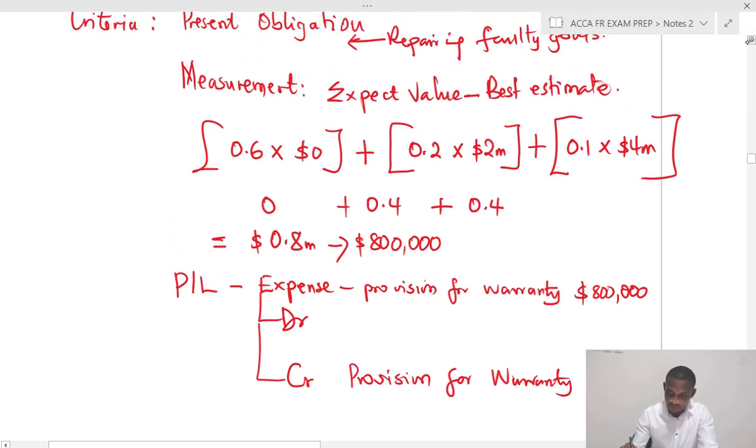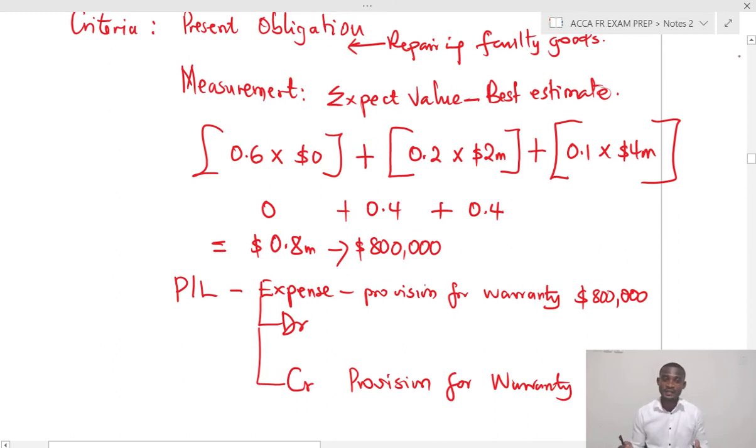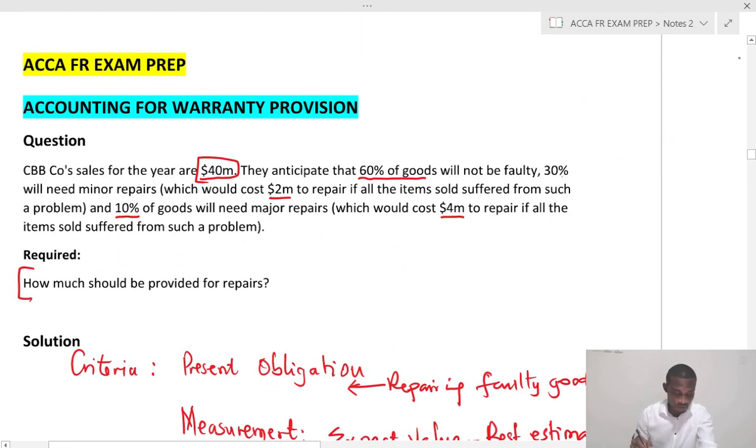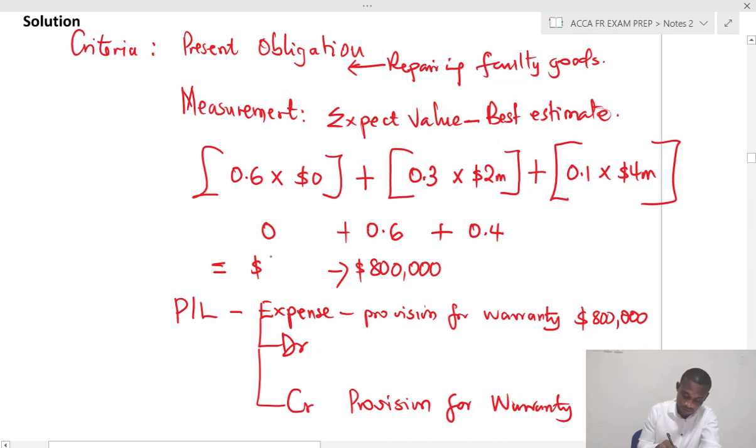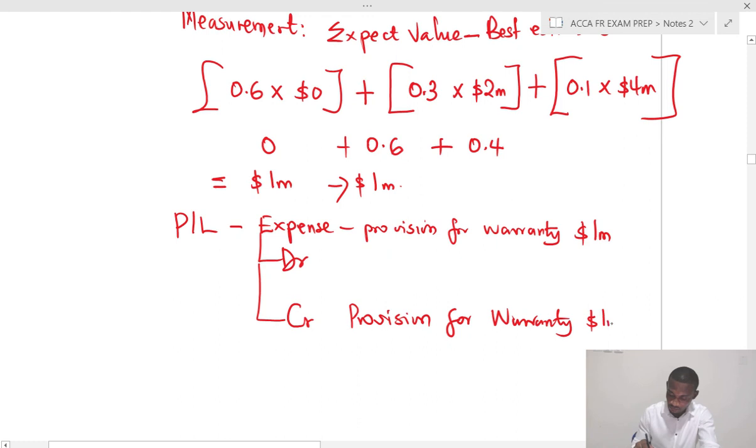So just notice what we have done. Whenever we are accounting for a provision for warranty, we take the expected values from all the possible cost outcomes. So let me quickly change that. 2 times 0.3, that's 0.6. So this will give us 1 million. So here it's 1 million. So the expense will be 1 million, not the 800, because of the percentage.